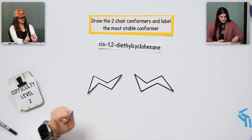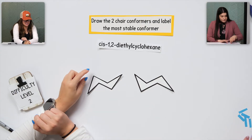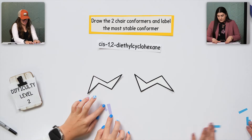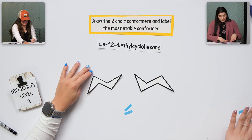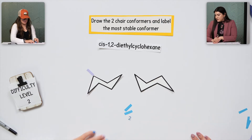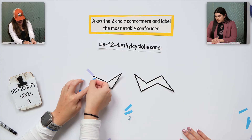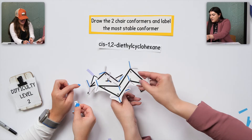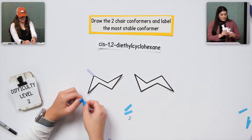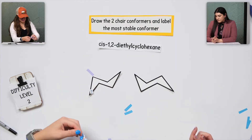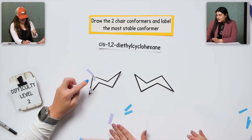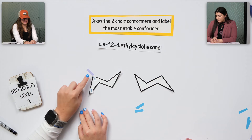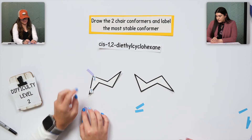Cis — they're both going in the same direction. One and two each have two ethyl groups coming from them. Let's determine which is one and which is two. I'll do this as one — it's easier to think of the point. I'll label this one one, and this one two. To make this easier, if it's axial, let's label it blue; if it's equatorial, let's label it purple.